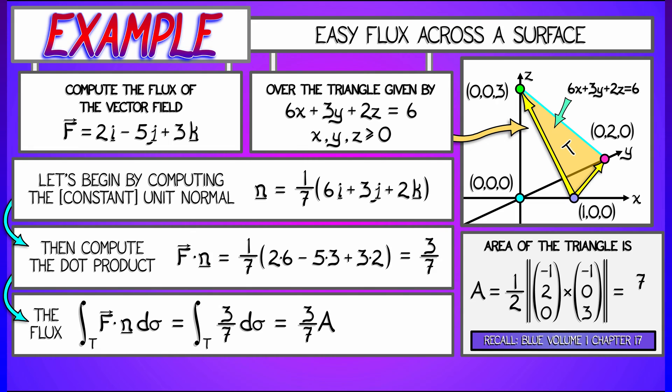You can check that that area is equal to 7/2, and that means that our net flux is 3/7ths times 7/2, which is 3/2. That was simple.